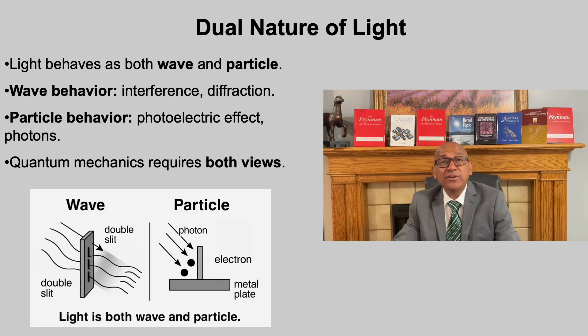From the last experiment, we saw that electrons, once thought of as particles, can also behave like waves. Light takes this idea even further. Sometimes it behaves like a wave, spreading out and interfering, as in a double-slit experiment. At other times, it behaves like a particle, with individual photons transferring energy in collisions, as we saw in the photoelectric effect. This wave-particle duality is not a contradiction, but rather a complementary description. Light is both a wave and a particle, depending on how we look at it. This dual nature lies at the very heart of quantum mechanics.